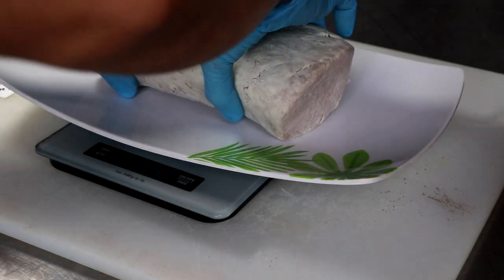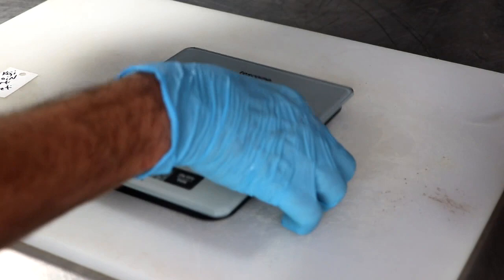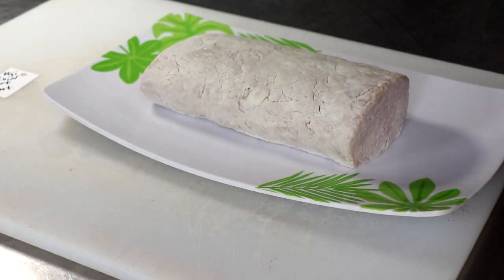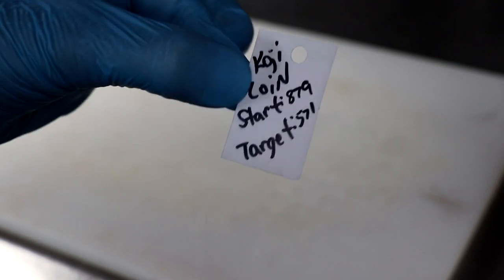And just like the other piece of loin, I want to weigh this because I want to get a green weight, basically my starting weight, because I need to know how much weight we're going to lose. And so I'm starting at 879, my target is 571. I want to lose about 35%.